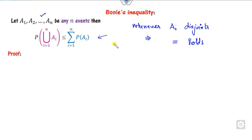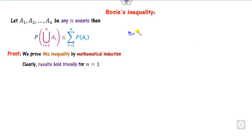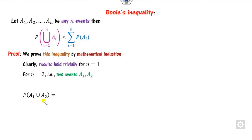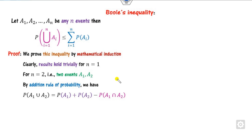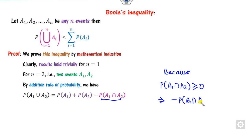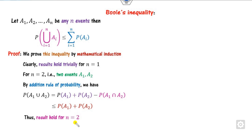How can we prove Boole's inequality? We prove it by induction. When N=1, the left-hand side is probability of A1 and the right-hand side is also probability of A1, so it holds as equality trivially. For two events A1 and A2, we use the addition law: probability of A1 union A2 equals probability of A1 plus probability of A2 minus probability of their intersection. Since the probability of the intersection is greater than or equal to zero, subtracting it gives a value less than or equal to probability of A1 plus A2. Hence the result holds for N=2.